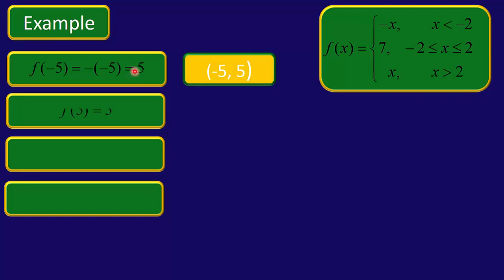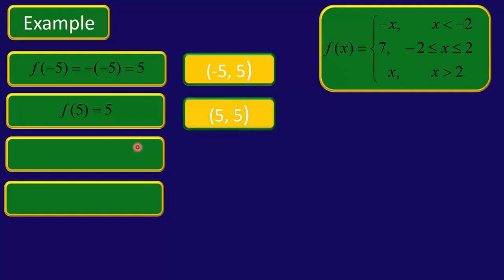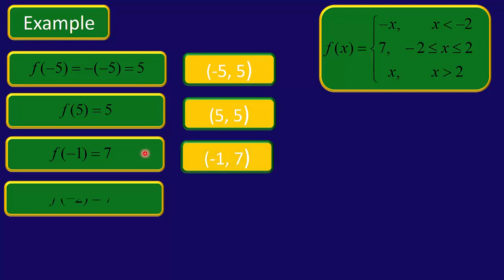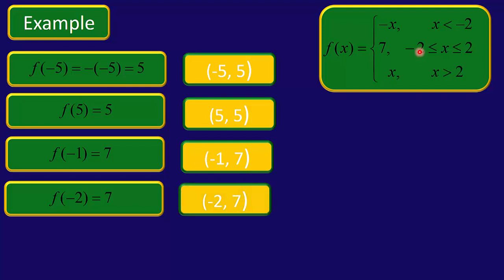Now let's look at f of 5. That falls in the third category where x is greater than 2, so f of 5 is just 5, giving us the ordered pair (5, 5). Now let's suppose we've got f of negative 1 — that's in the middle category because negative 1 is between negative 2 and 2, so that would just be a flat-out 7. No calculations required. What about f of negative 2? Notice the first piece is x strictly less than negative 2, so negative 2 is not included there. We go down to the second piece where x can actually equal negative 2, so that's going to be 7, giving us the point (negative 2, 7).